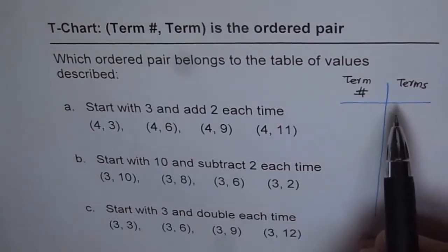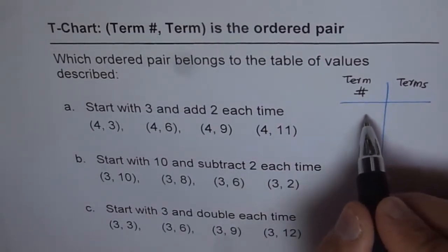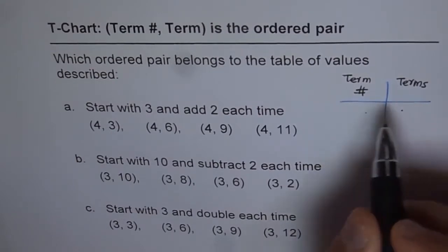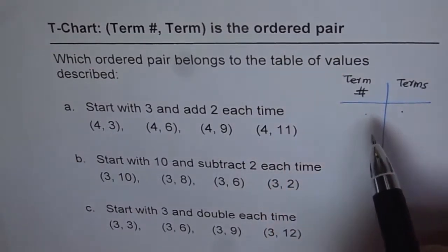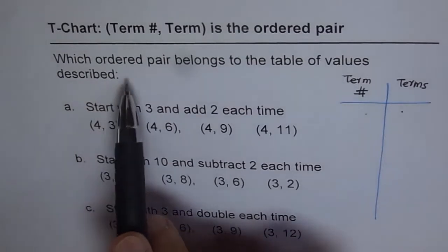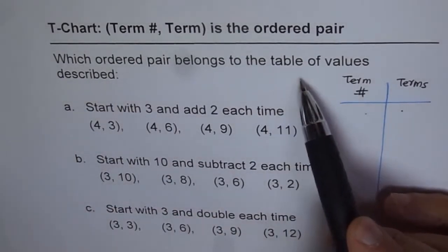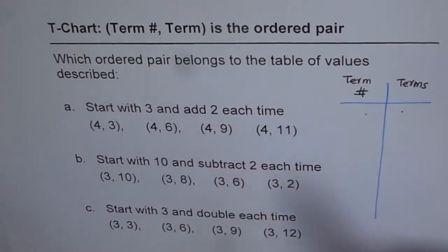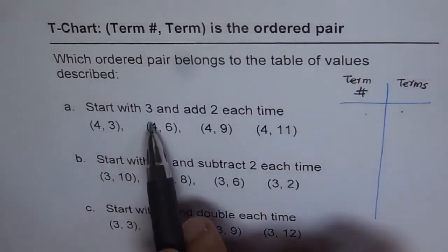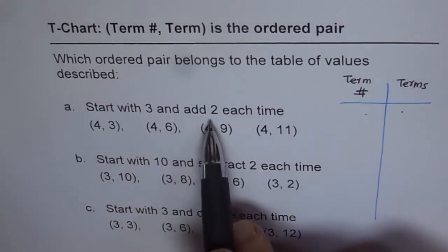So in this t-chart, the combination of term number and terms is called the ordered pair. So the question is which ordered pair belongs to the table of values described: start with 3 and add 2 each time.